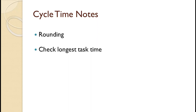Two notes about cycle time. First, there's no point in having more decimal points than are used in the task times. Since the task times for this problem are given in whole seconds, we only need a whole number for the cycle time — we could have safely rounded if it had decimal points. Second, some textbooks call this the desired cycle time because it may require adjustment. The cycle time cannot be shorter than the longest task time; if it were, no workstation would have enough time to complete that longest activity. If the calculated cycle time is shorter than the longest task time, you increase the cycle time to match it. The longest task time in this problem is 30 seconds, so that is not an issue here.